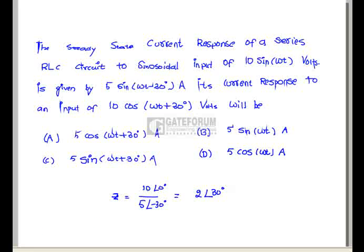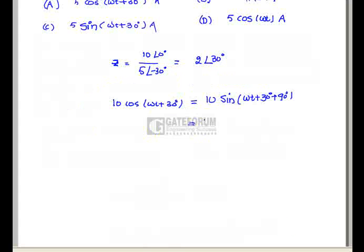The voltage and currents in the Z expression are in sine form. In the next case, the input is 10cos(ωt). We can express it in equivalent sine form by advancing it by 90°, that is 10sin(ωt + 90°), which equals 10sin(ωt + 90°).